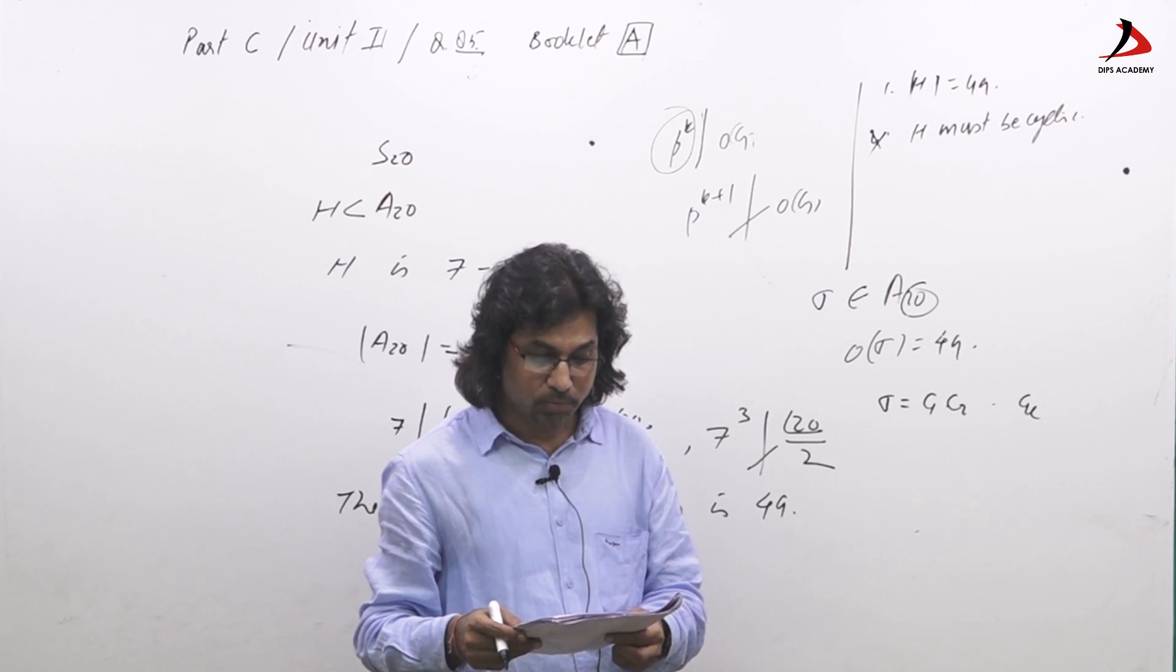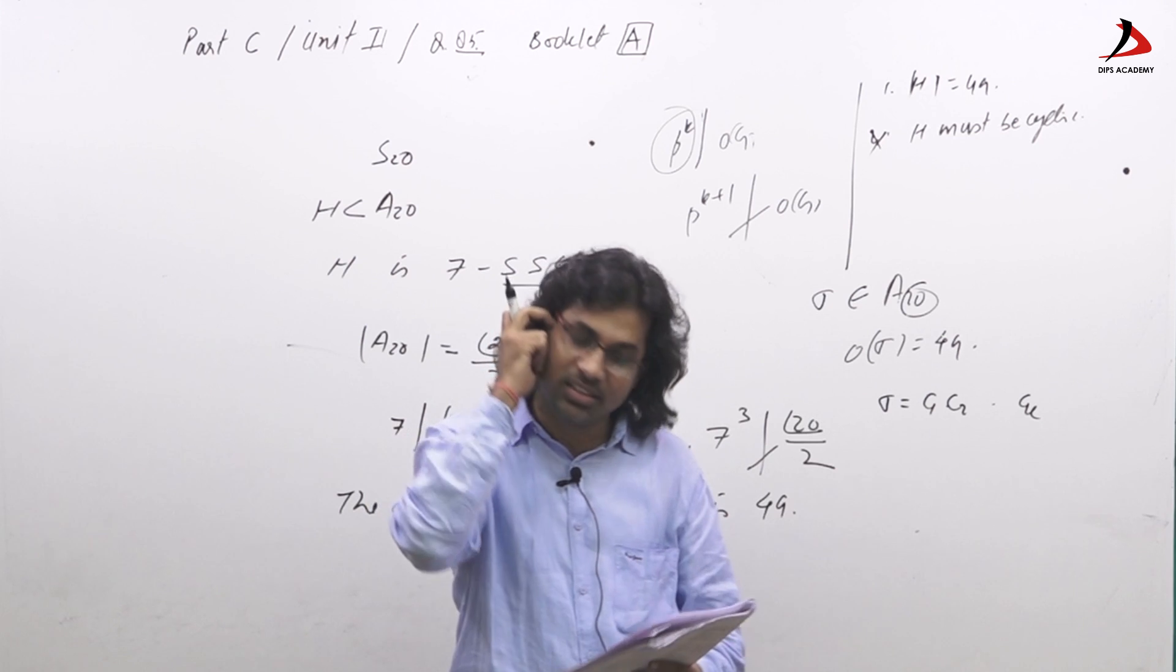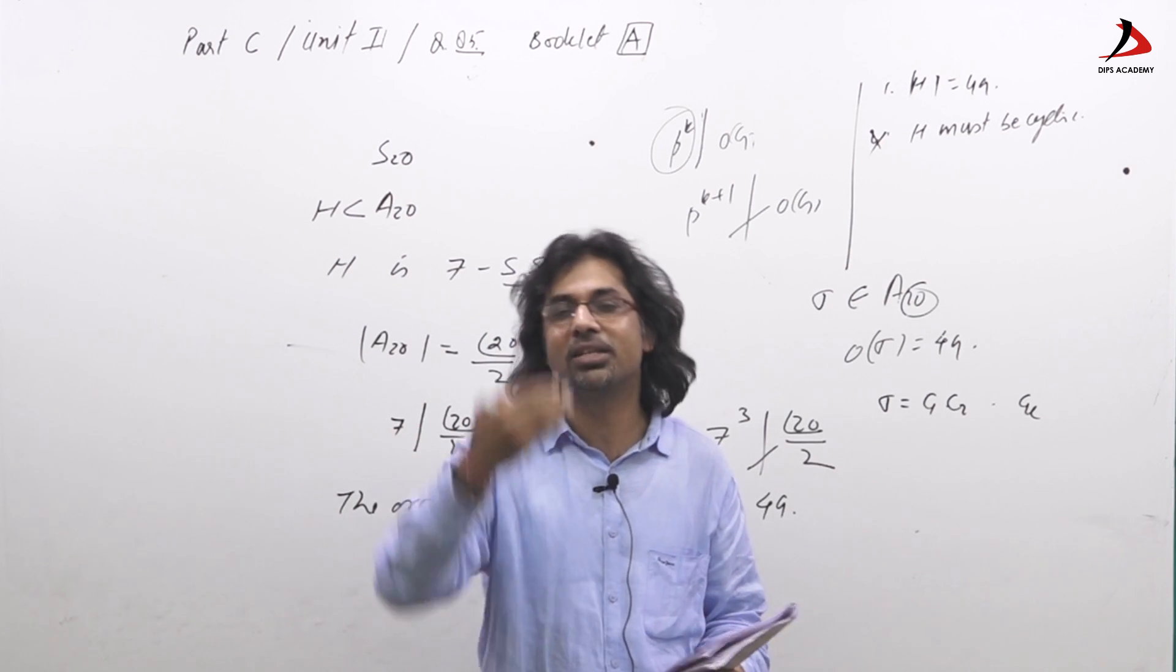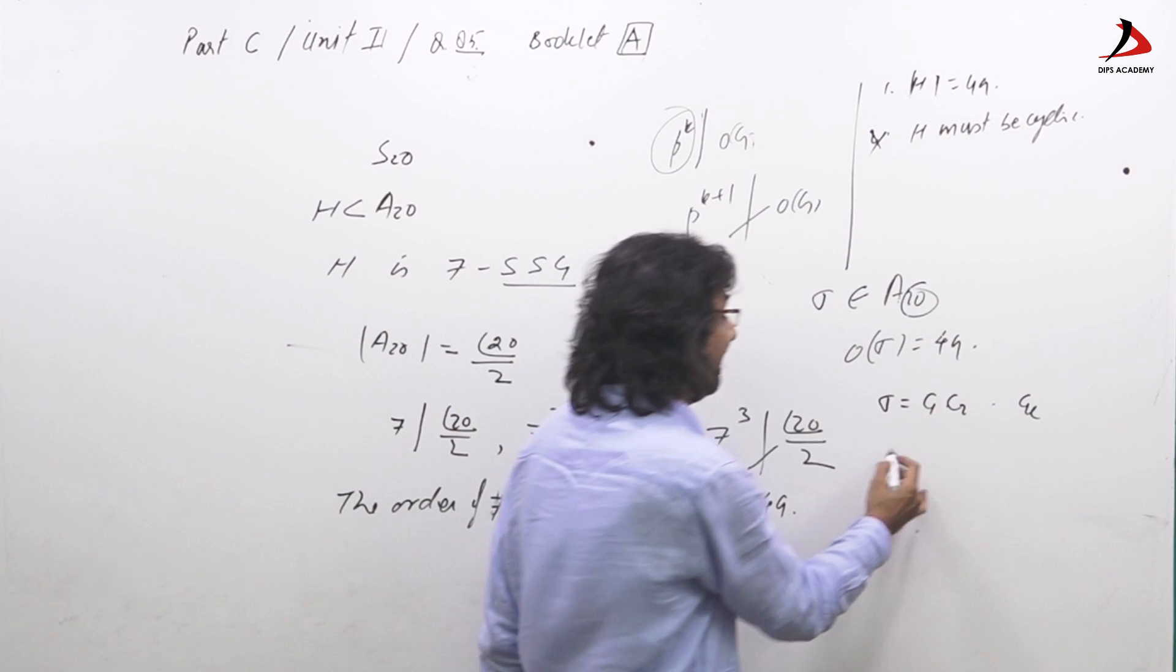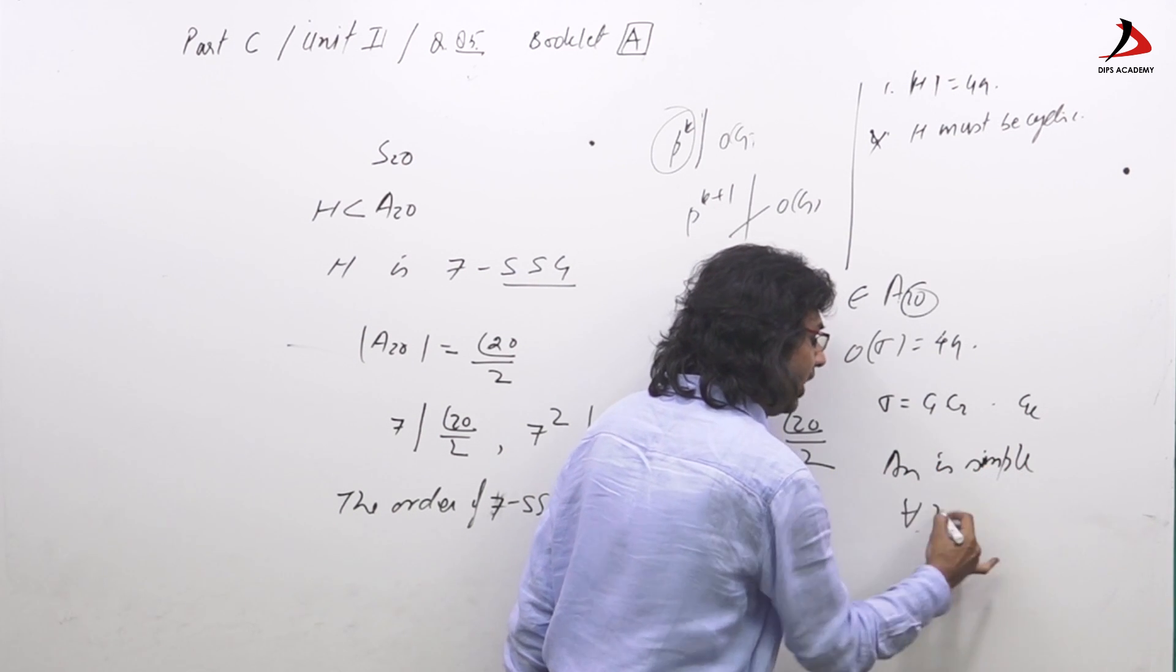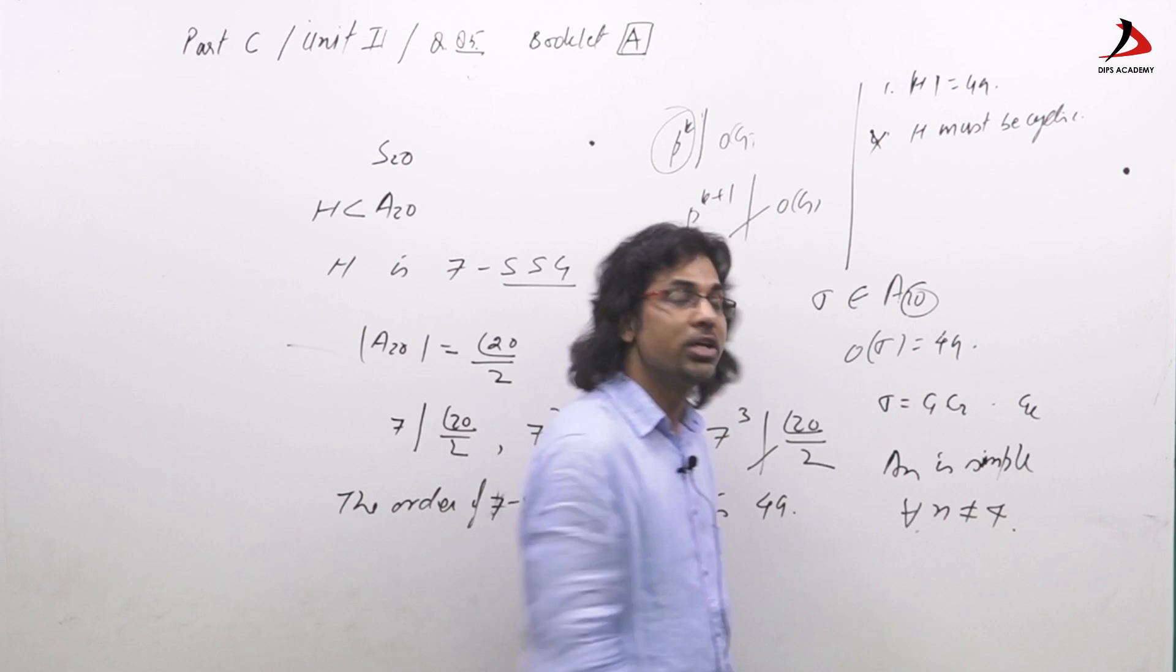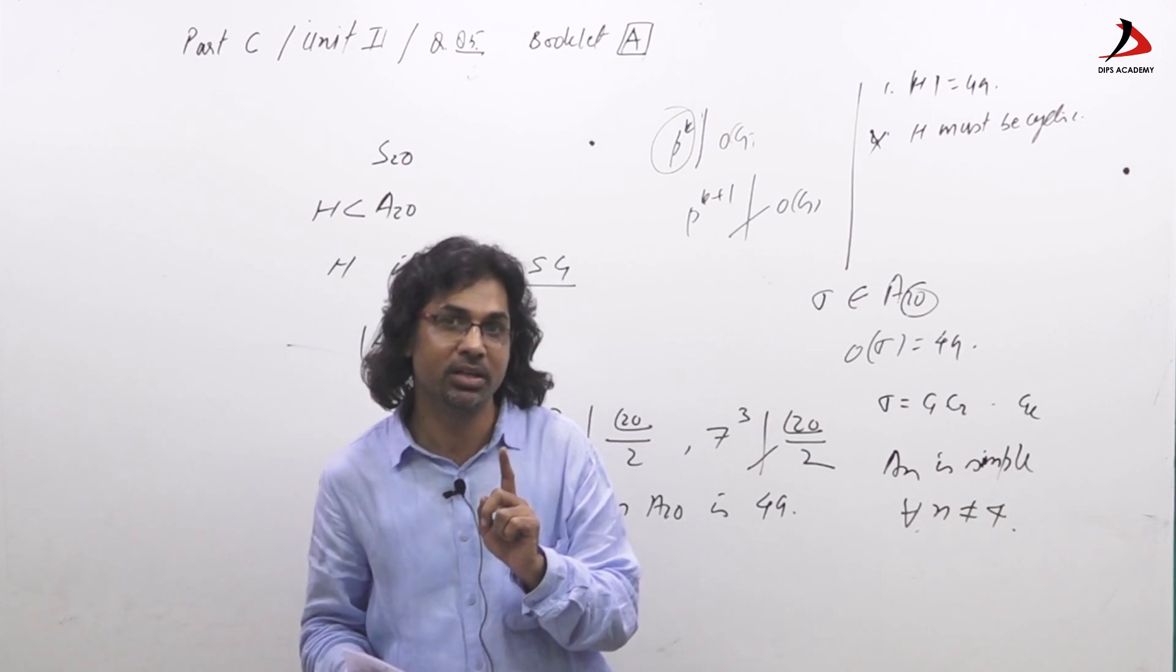Now, third is H is normal subgroup of A_20. They are asking very standard result in this multiple choice question exam. So there are certain results which we need to remember: that A_n is simple for all n not equal to 4. So A_20 is simple.